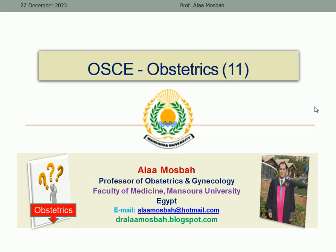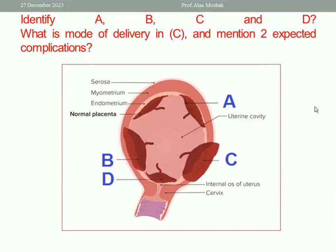Let us try to answer some questions in Obstetrics. Look at this picture, please, and identify A, B, C, and D. This is the first question in this picture. The second: what is the mode of delivery in C? And mention two expected complications.